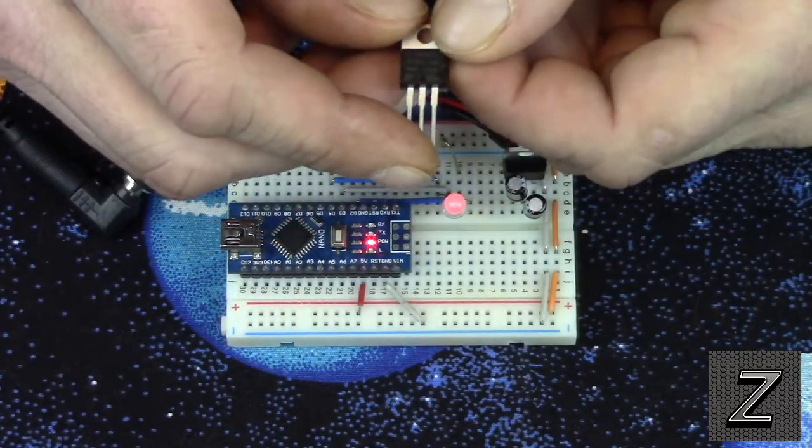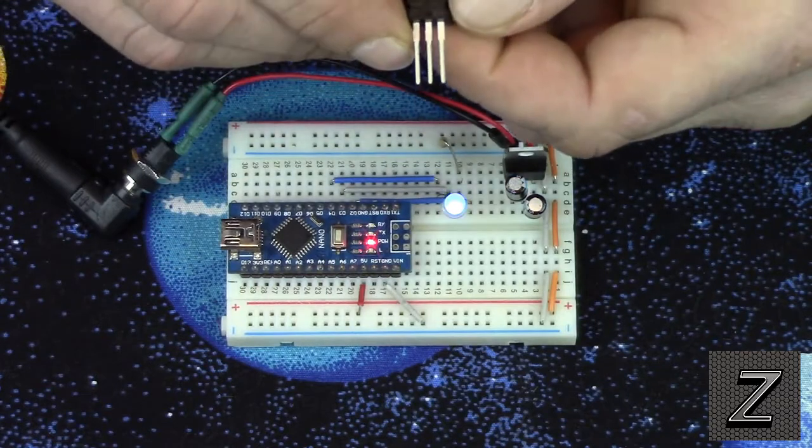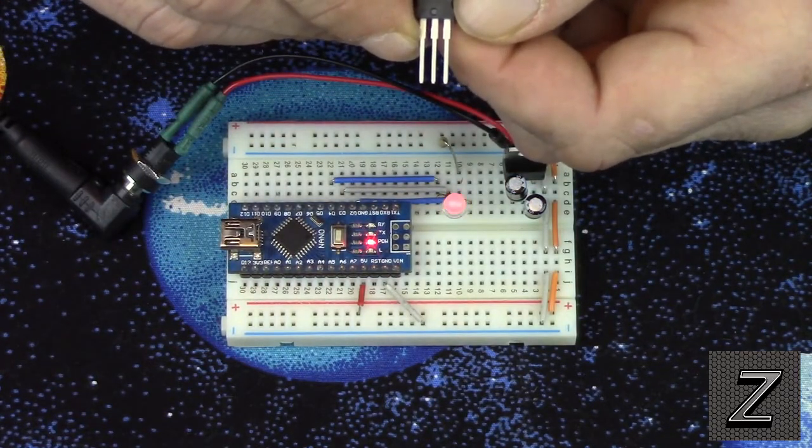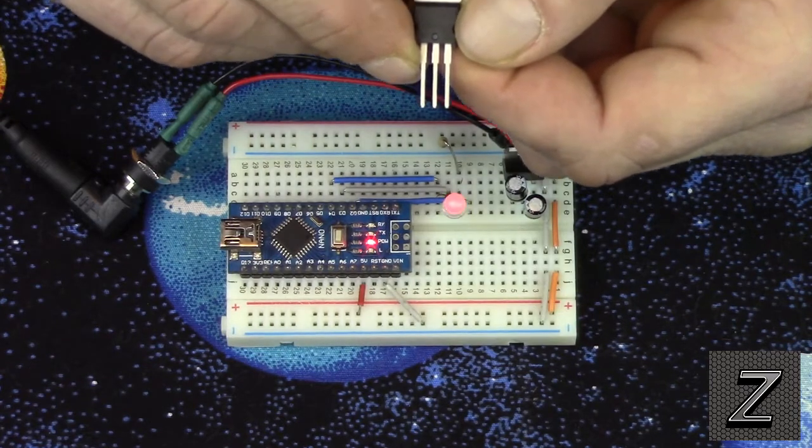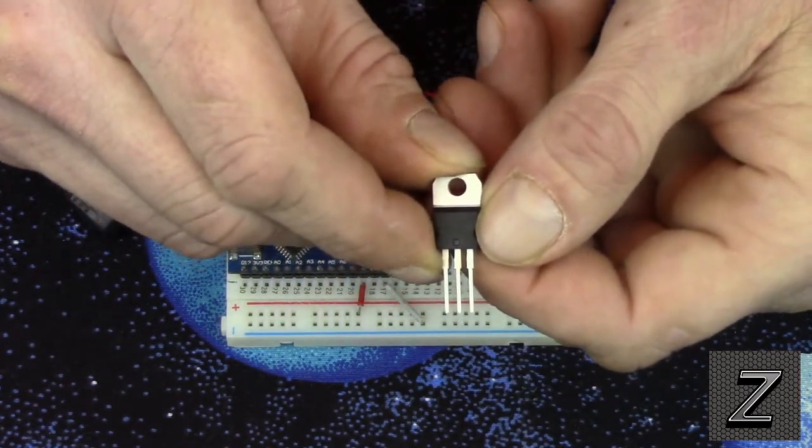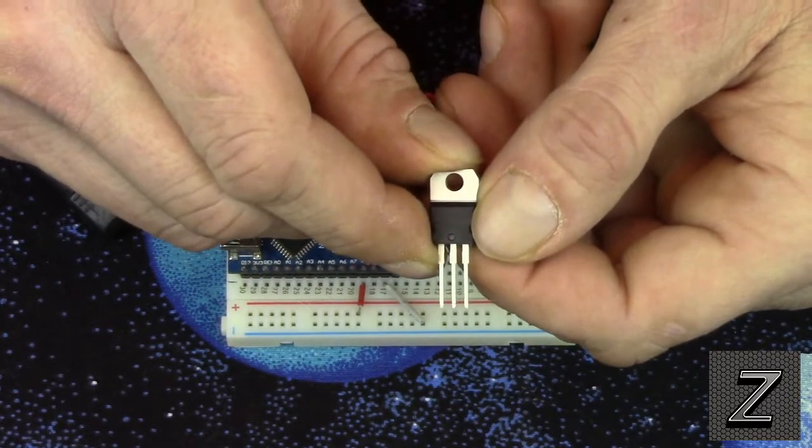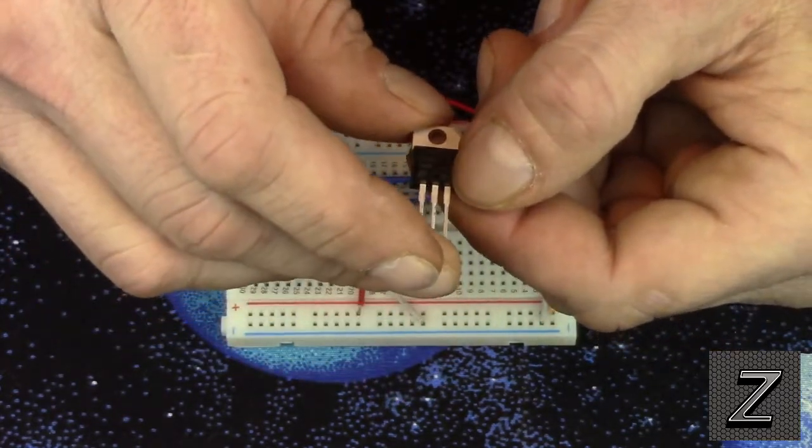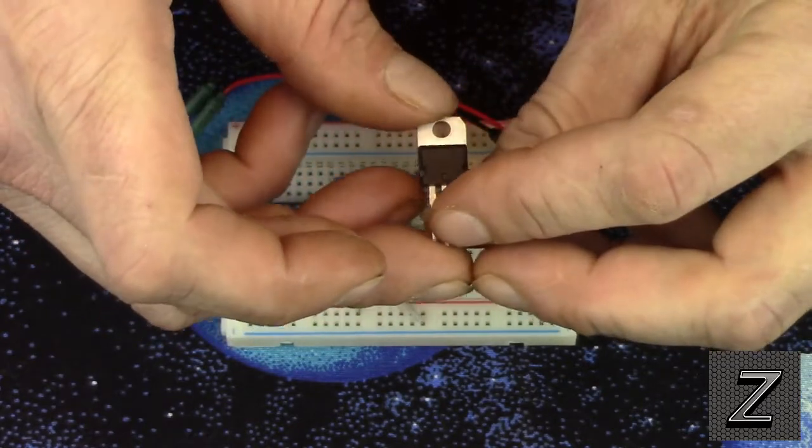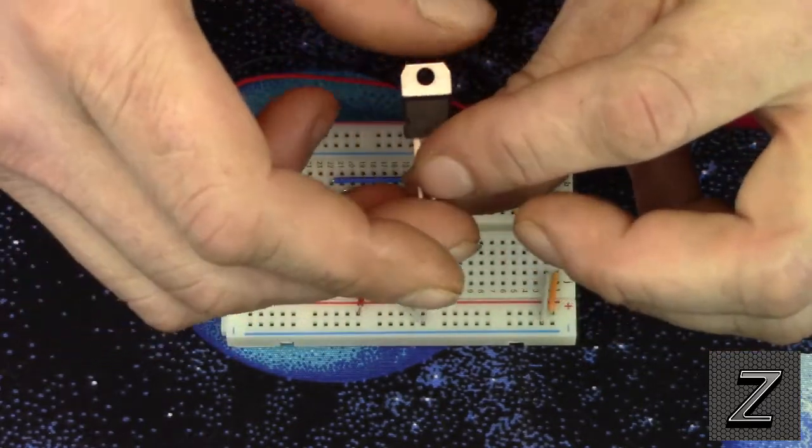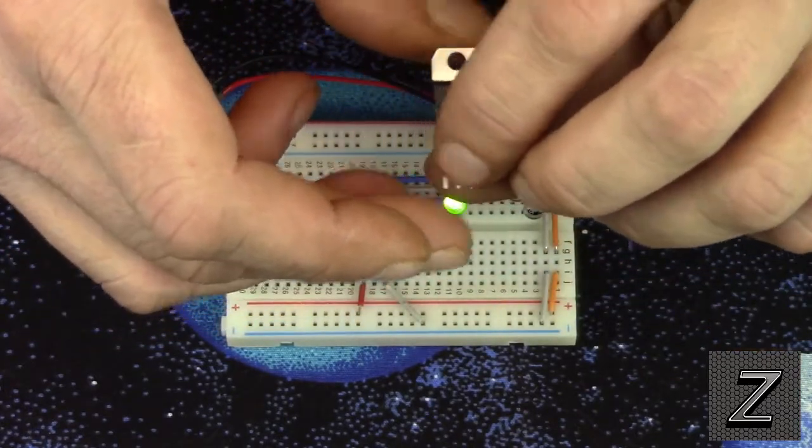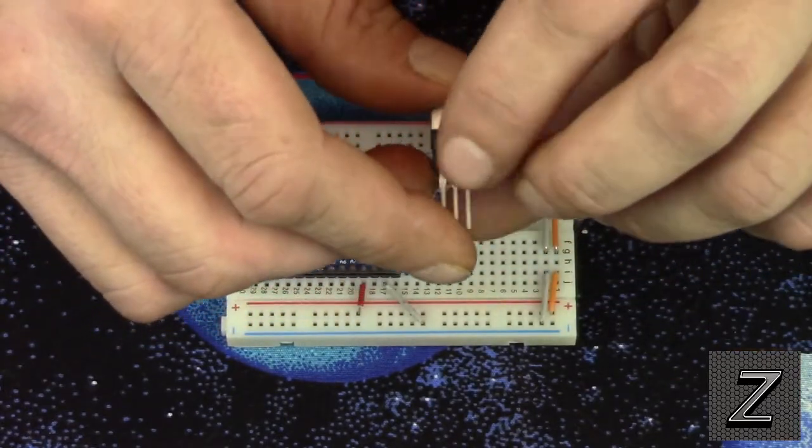To hook this up, with it facing at you like this, the pin on the left is the voltage in, the pin in the middle is the ground, and the pin on the right is your voltage out. That's all there is to hook this up. If you'd like to see a schematic of it and a picture showing this, I'll have that on the website. Just look in the description below, and you'll find a link to take you to this project's website.